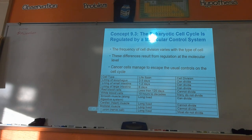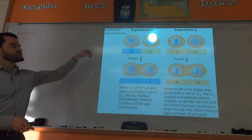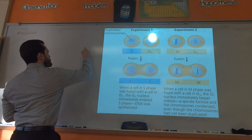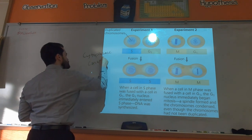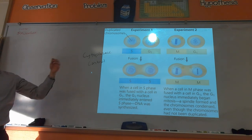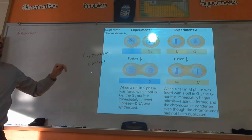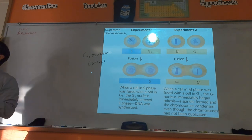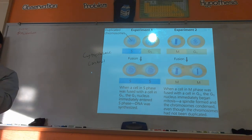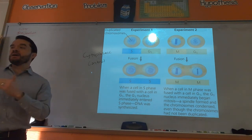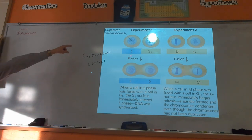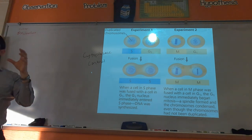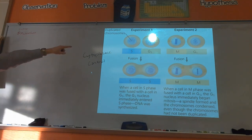The first concept is cytoplasmic control. The signals that tell a cell when to divide are called cytoplasmic controls — molecules in the cytoplasm that tell the cell to go into G2 or M phase. An experiment to discover this took two cells: one in S phase (duplicating its chromosomes) and one in G1, then fused their cytoplasm.